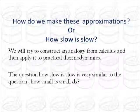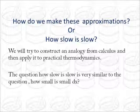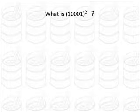So now what we will try to do is construct an analog, an analog from calculus and then apply it to practical thermodynamics. We are doing this because I believe that the question how slow is slow is very similar to the question that how small is small dx. So let's begin with it. Suppose I ask you to calculate the square of 10001. What most of you will do is something like this: 10001 into 10001. But you know this is a tedious and lengthy process.